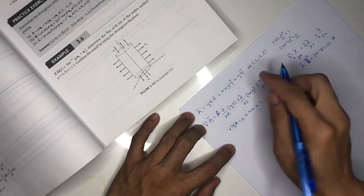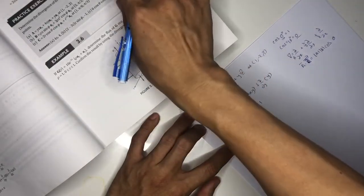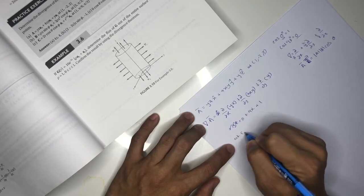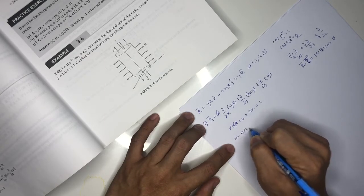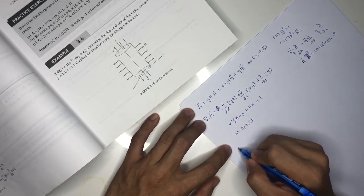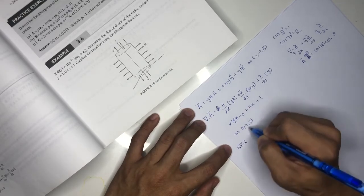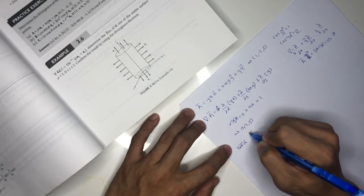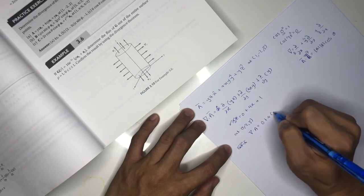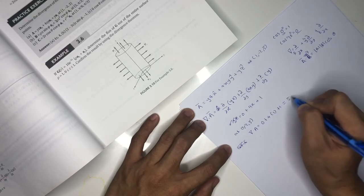So at this point, we evaluate at the specified point (1, -2, 3). What is the value? It is 0 plus 4 times 1 plus 1, which equals 5.